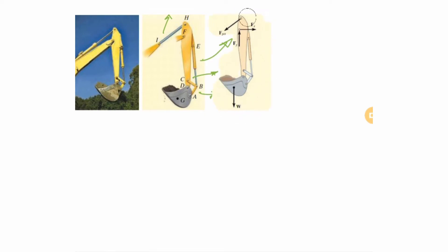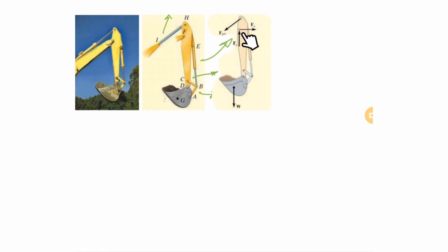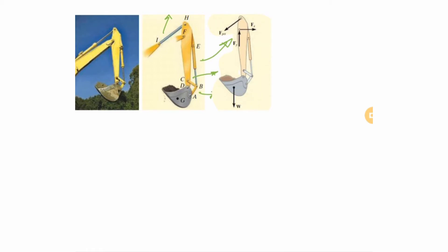For example, isolating the first part: remove this jack (a two-force member — one unknown force), remove this pin (two unknowns), and add the weight. You now have three unknowns for a planar problem — solvable with three equilibrium equations. Solving this gives you the forces at the connections, and you can move on to the next part.